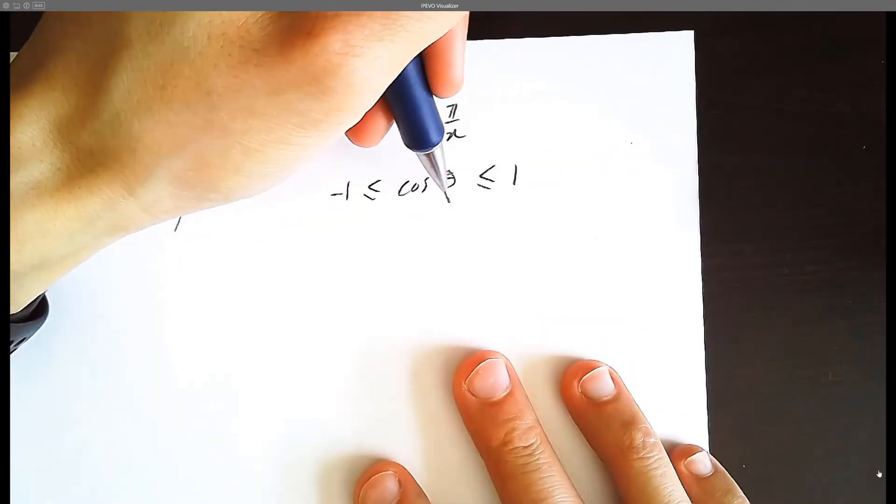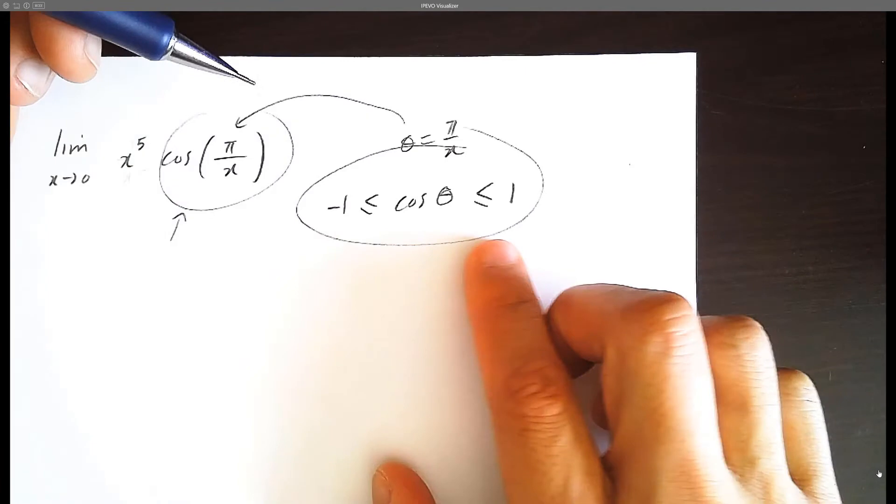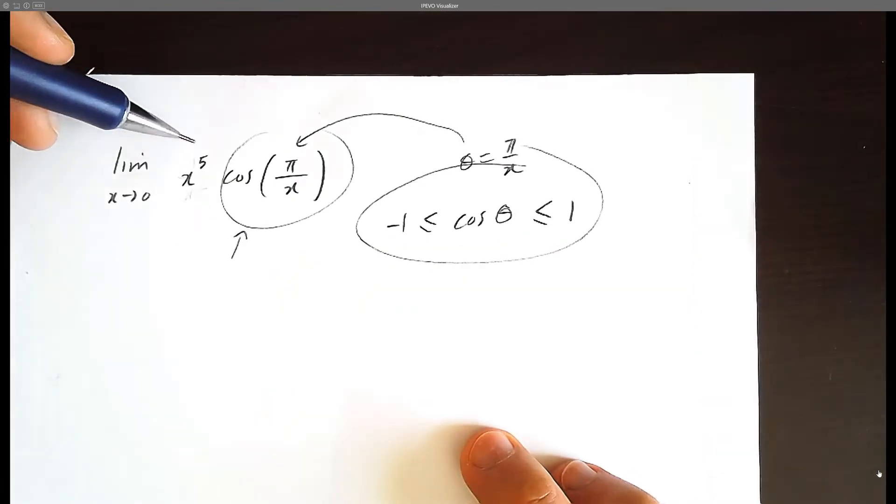So from here, we're going to multiply each part of the inequality by x to the 5.